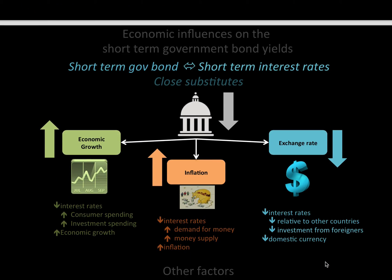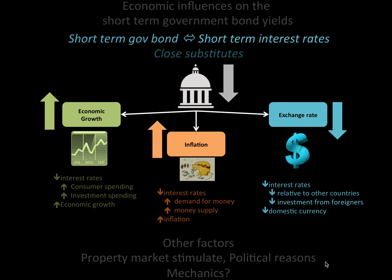What are the economic influences on short-term government bonds? This is a very nice exam question, and you'll also need to look at other factors such as property market stimulation, political reasons, and mechanics. Short-term government bonds are linked to the short-term interest rates and are quite a close substitute. You can see by my diagram that when this decreases, economic growth is going to increase, inflation will increase, and the exchange rate will decrease. Feel free to pause and go through all those other things. That is a quick introduction to the money market for CA1.